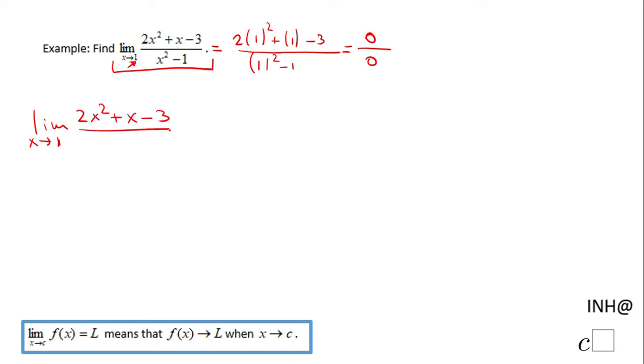Let's see how we factor these two expressions. I'm going to start with the denominator, which is a difference of squares. x² - 1 is x - 1 times x + 1.